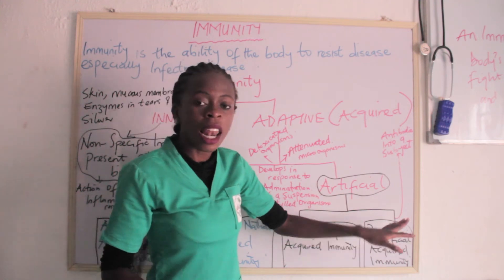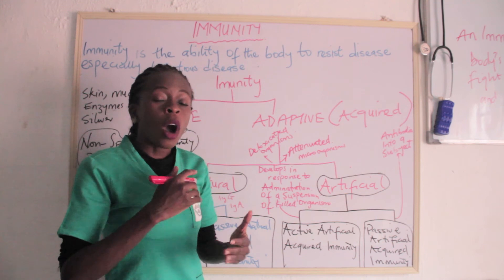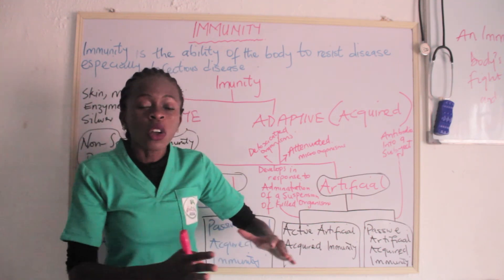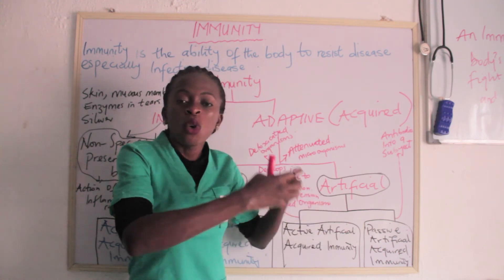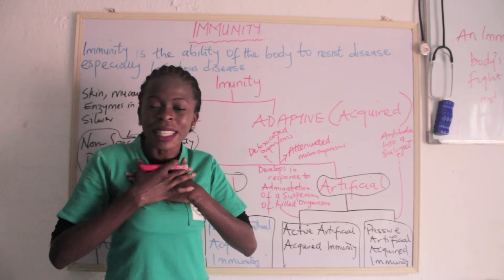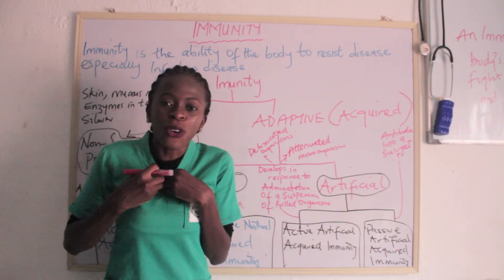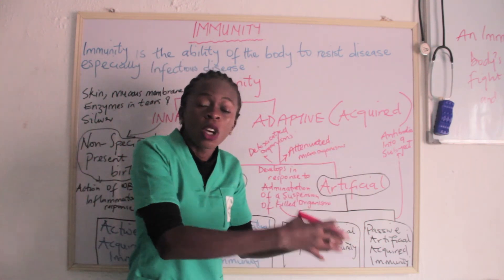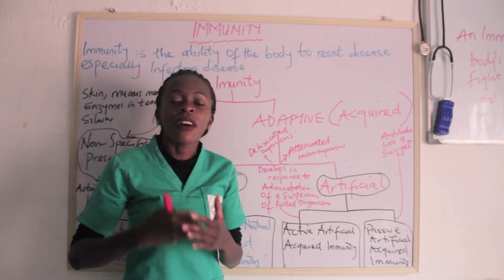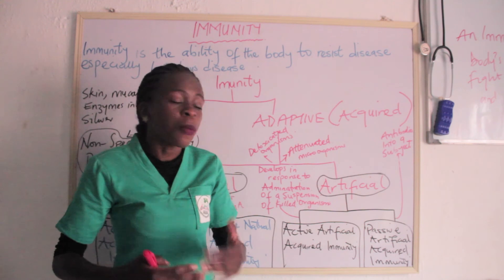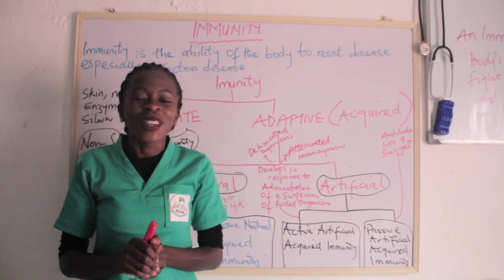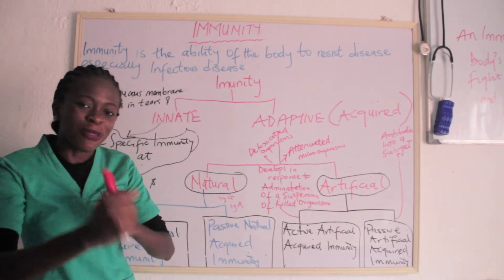Then there is passive artificial acquired immunity. In this type, antibodies are injected into a subject. These antibodies are gotten from people who are already immunized or who have developed antibodies. For example, they take antibodies from an immunized person and inject them into another subject to help them. Cases such as a nail injury on the foot — they ask if you've been immunized, did you take a tetanus injection — are examples of passive artificial acquired immunity. Active immunity lasts long, while passive immunity is usually for a short period of time, helping to fight the disease at that particular moment.